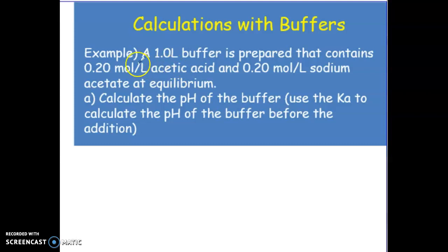So for the first one here, we have a one liter buffer that's prepared that contains 0.2 moles per liter of acetic acid and 0.2 moles per liter of sodium acetate at equilibrium. Okay, so meaning we do not need an ICE table - they're already giving us the equilibrium concentrations. So we are to calculate the pH of the buffer and we're going to use Ka to do that because of course acetic acid is a weak acid.